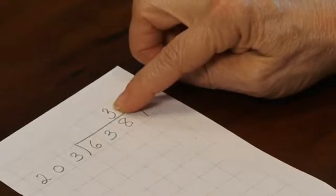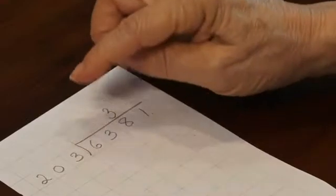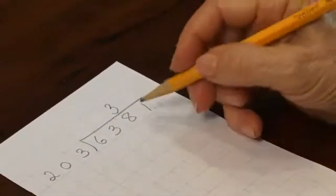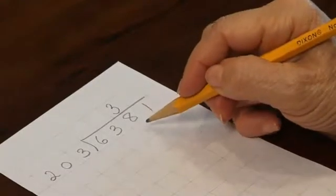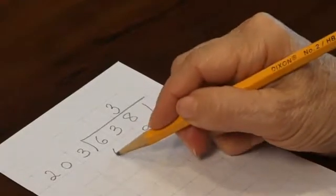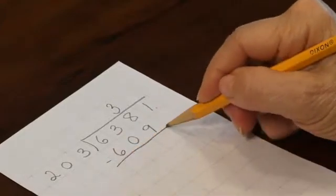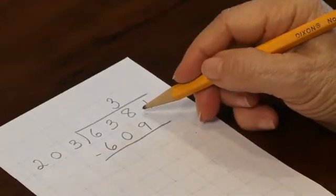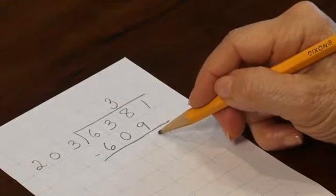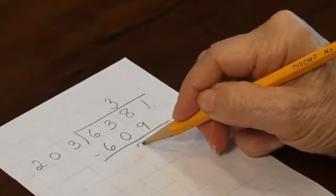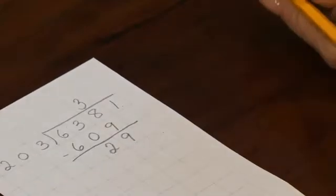So if there are three groups of 203, what would that value be? 203 taken 3 times equals 609. 609 from 638 is 29.